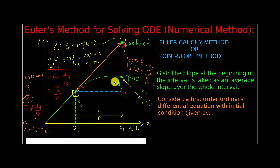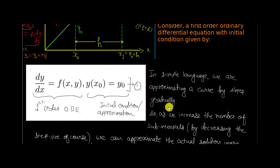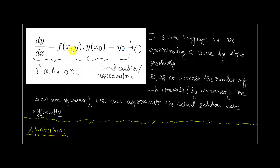The gist of this method: the slope at the beginning of the interval is taken as an average slope over the whole interval. Consider a first order ordinary differential equation with initial condition: dy by dx equal to f of x, y, with y at x0 equal to y0. This is equation number one — the first part is the first order ODE and the second part is the initial condition.